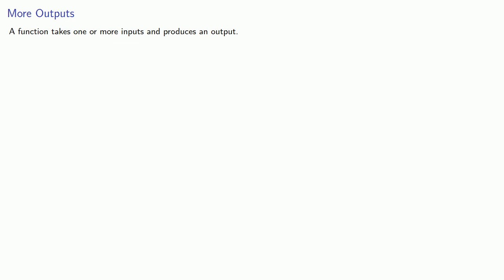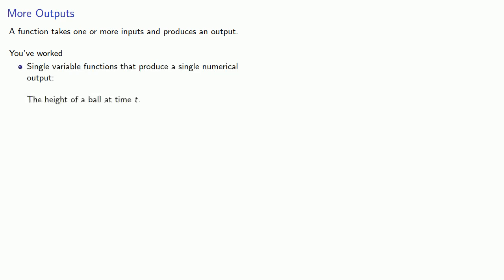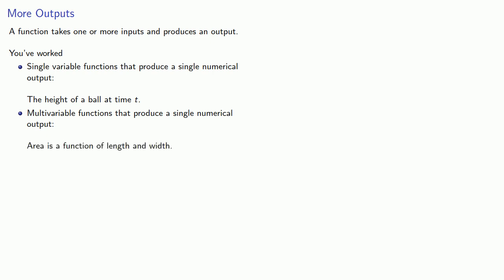A function takes one or more inputs and produces an output. You've worked with single-variable functions that produce a single numerical output, like the height of a ball at time t. You also have looked at multivariable functions that produce a single numerical output — for example, area is a function of length and width. But who says the output has to be a number?